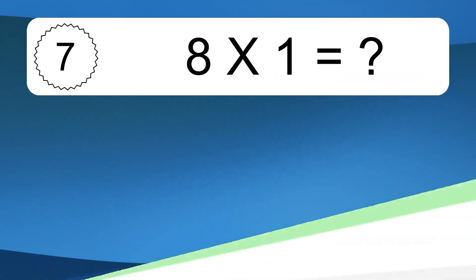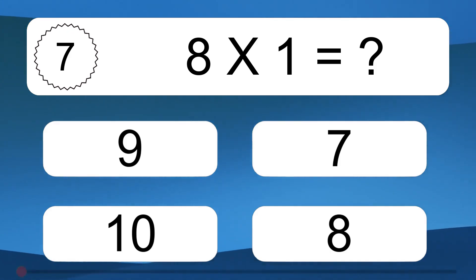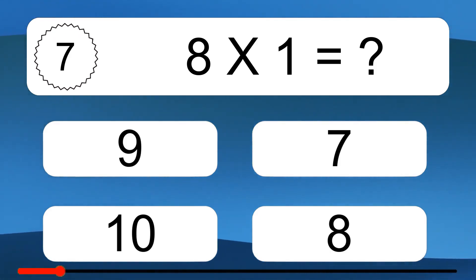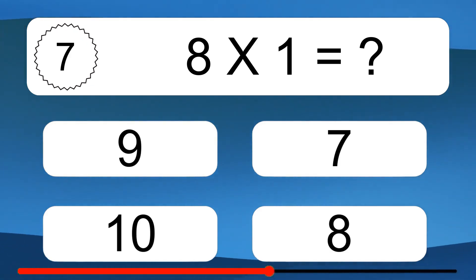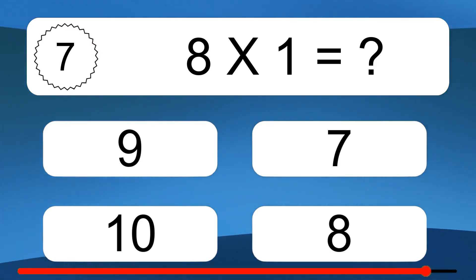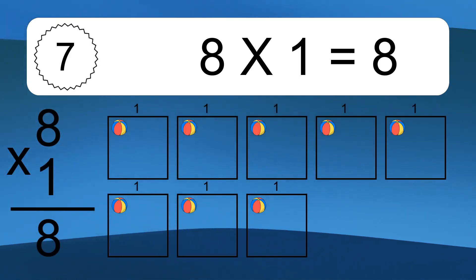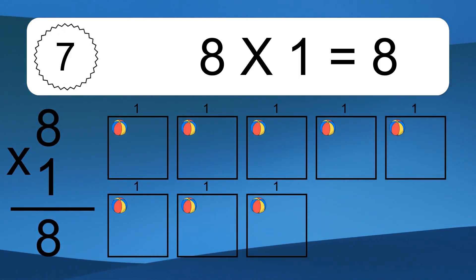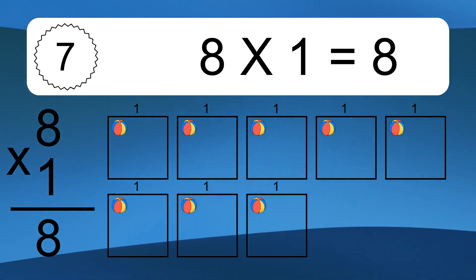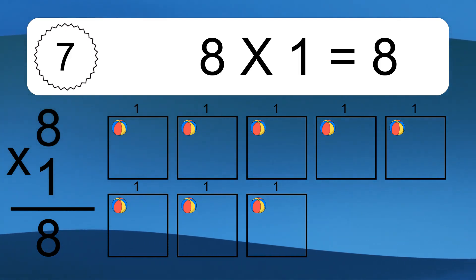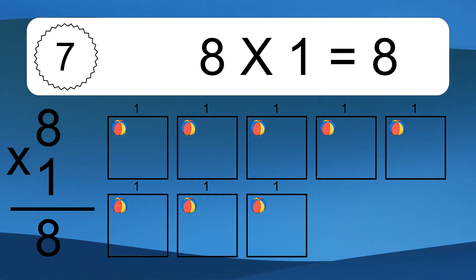8 times 1 equals what? 8 times 1 equals 8. We have 8 boxes, and each box has 1 colorful ball inside. If you count all the balls in all the boxes together, you will have 8 times 1 balls. This equals 8 balls.